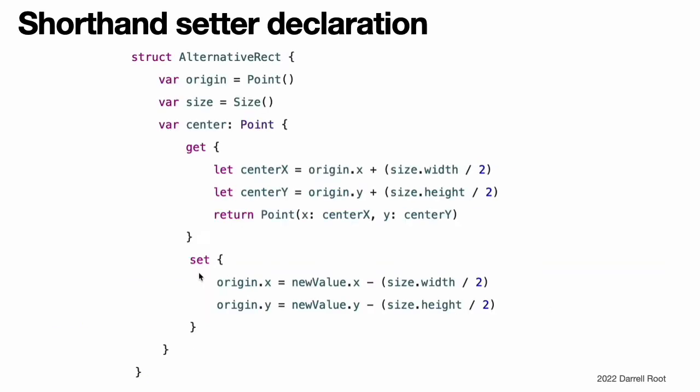Shorthand setter declaration: if a computed property setter does not define a name for the new value to be set, a default name of newValue is used. Here is an alternative version of the Rect structure that takes advantage of this shorthand notation.